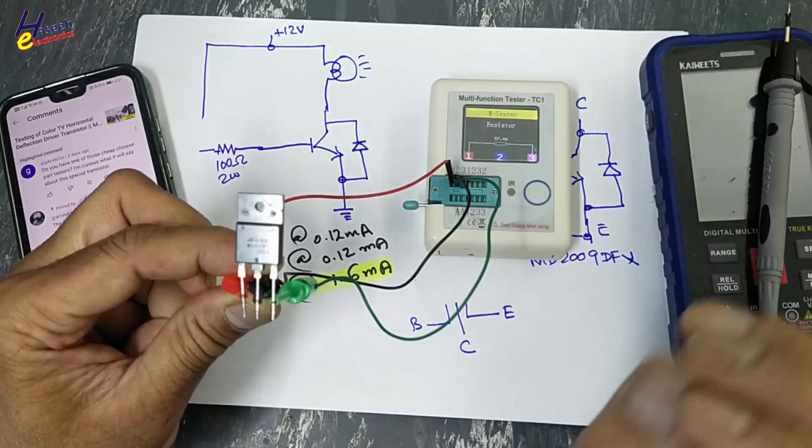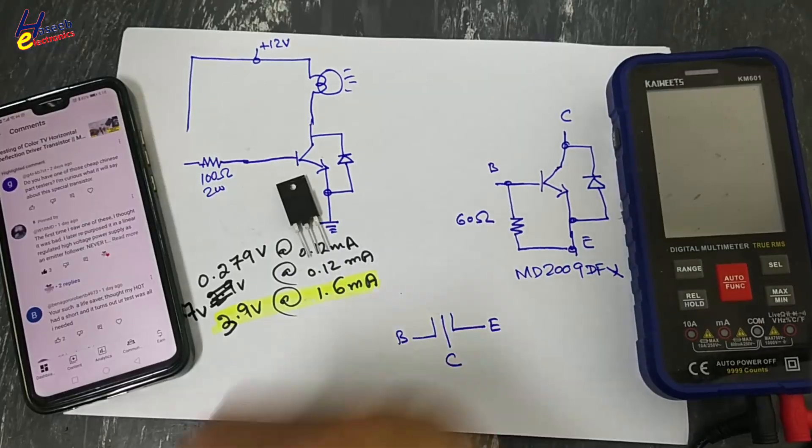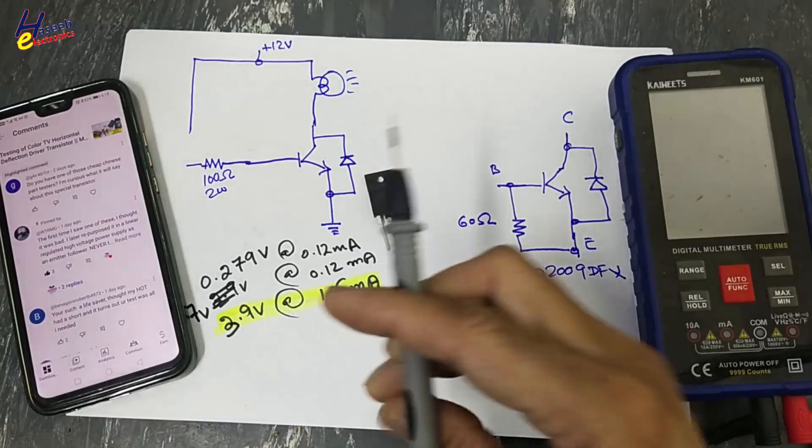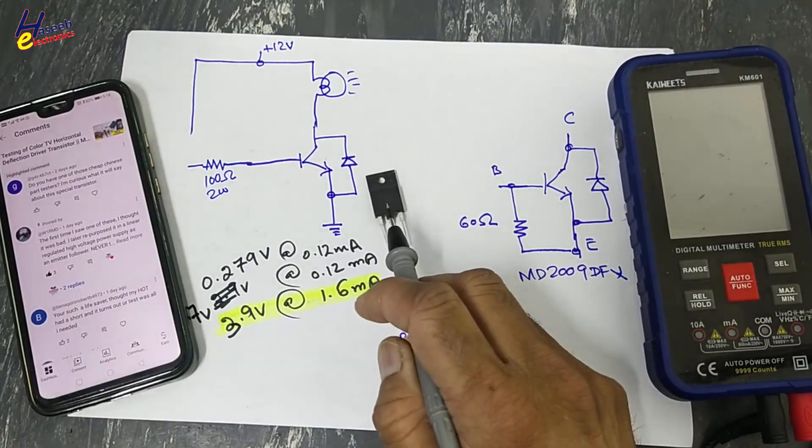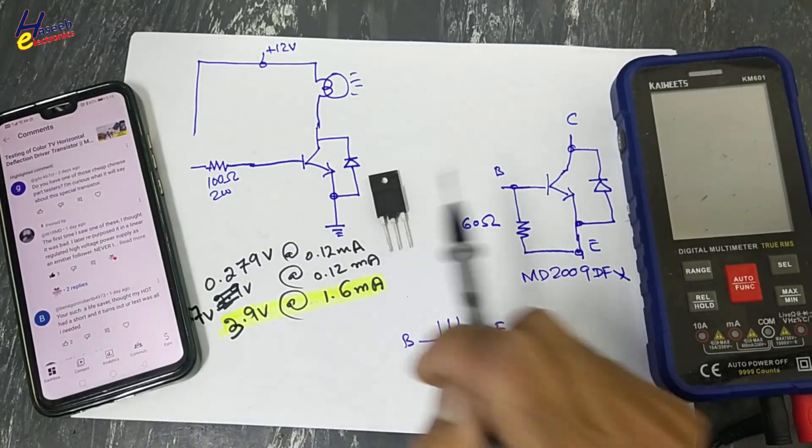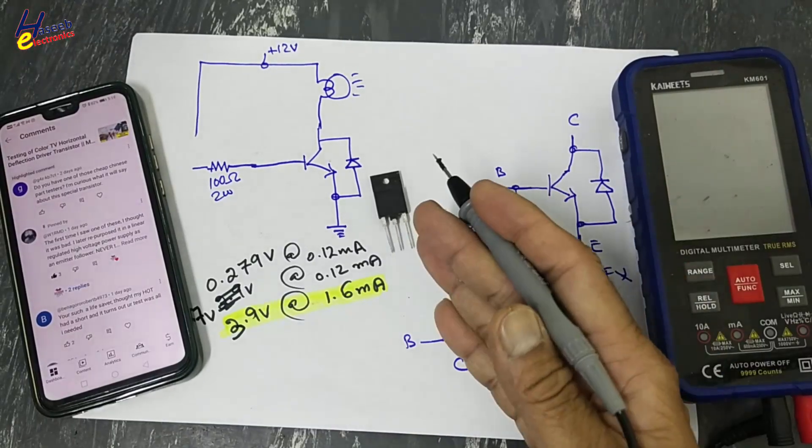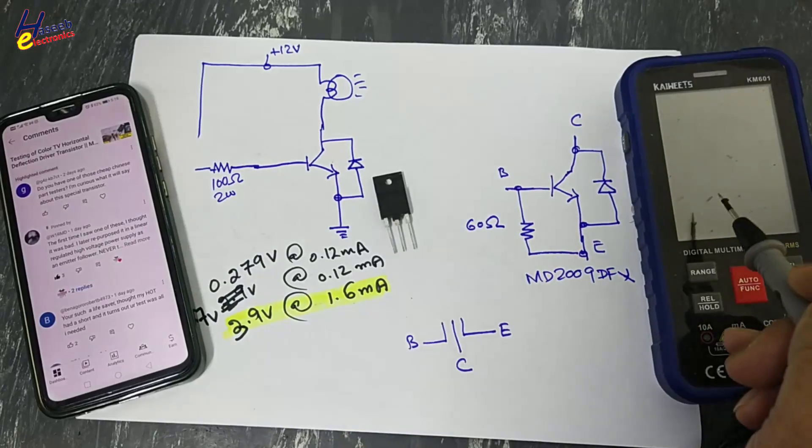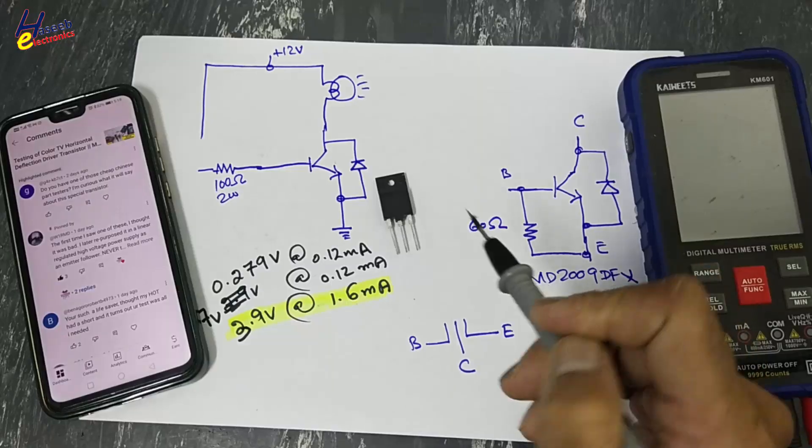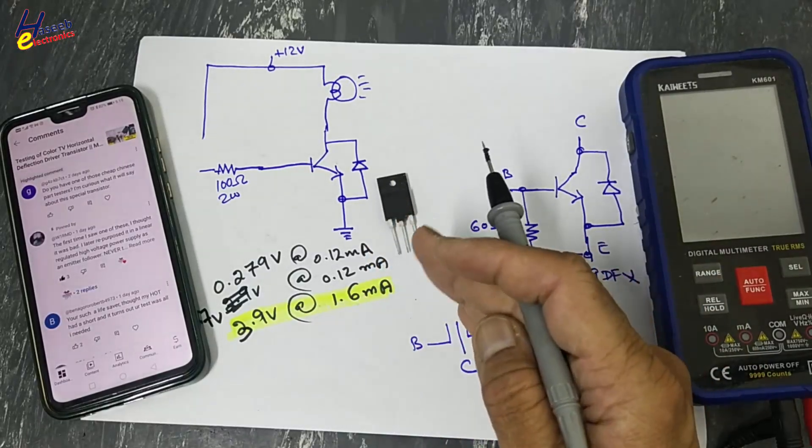Welcome back to my channel. In last two videos we discussed this transistor. In the first video I tested it using multimeter. There was a question: when we test with multimeter in diode mode and resistor mode there is different reading, so I explained why there is difference.